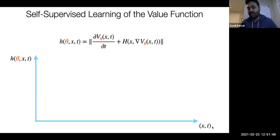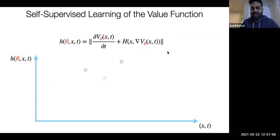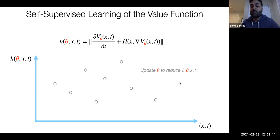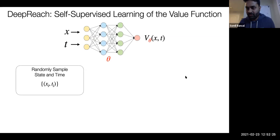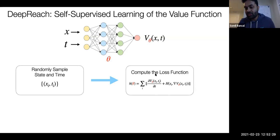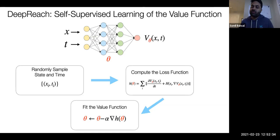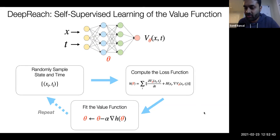Pictorially, starting with some random parameters theta, I randomly sample some (x, t) points — at first the PDE residual won't be zero. I then optimize theta to move all these residual values towards zero. DeepReach randomly samples state and time, applies the loss function (the left-hand side of the PDE), updates the neural network parameters to minimize this loss, and keeps repeating for as many iterations as desired until parameters converge — without requiring explicit supervision of the true value function.